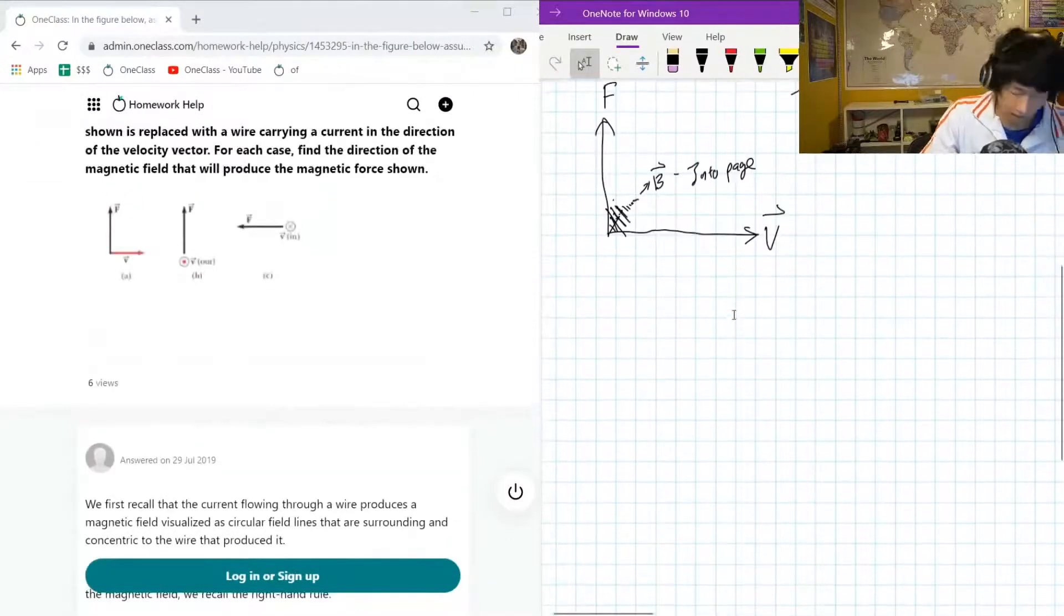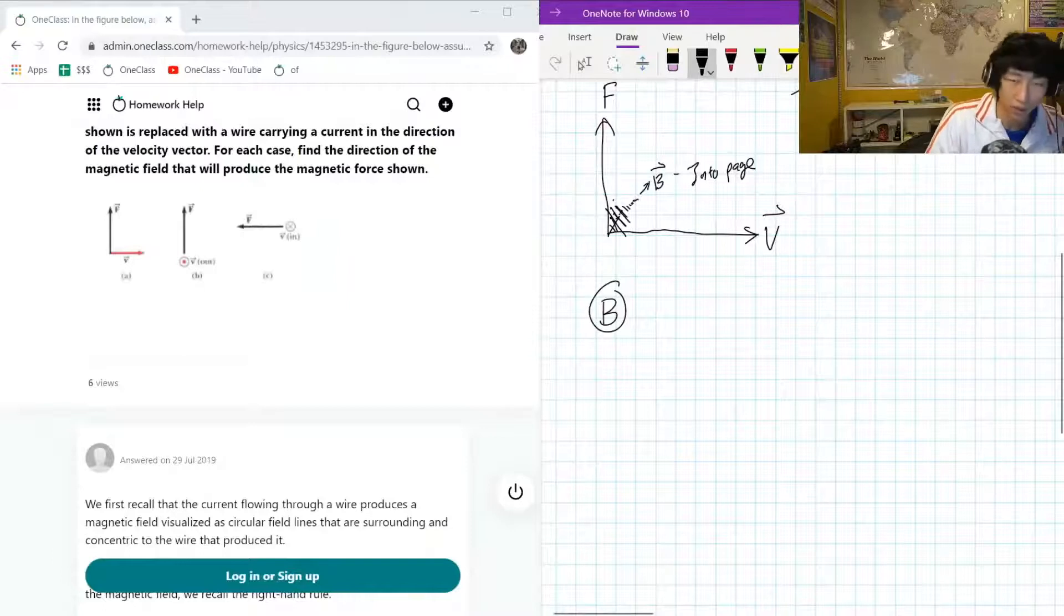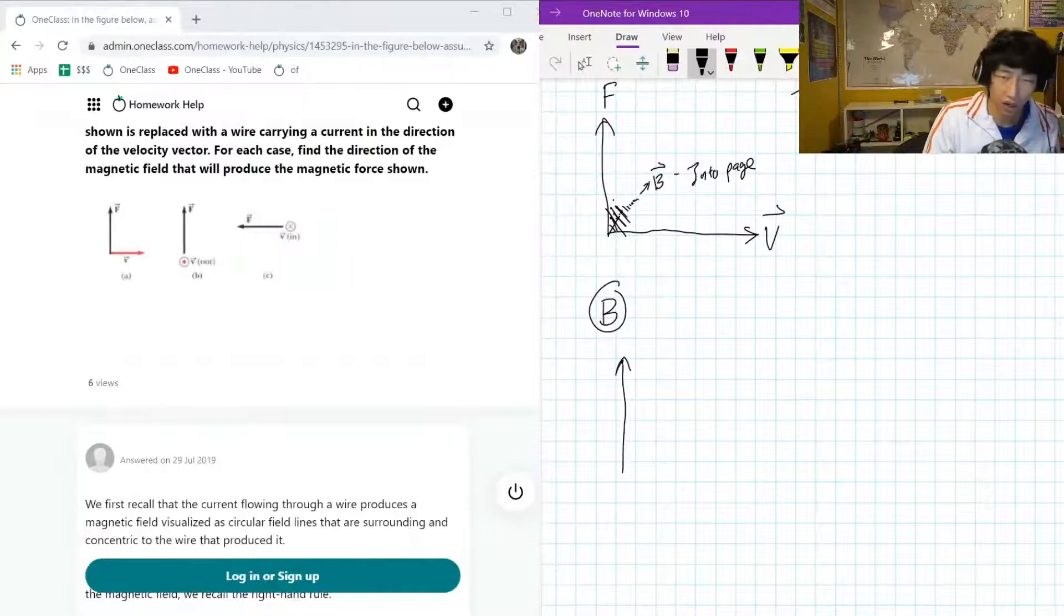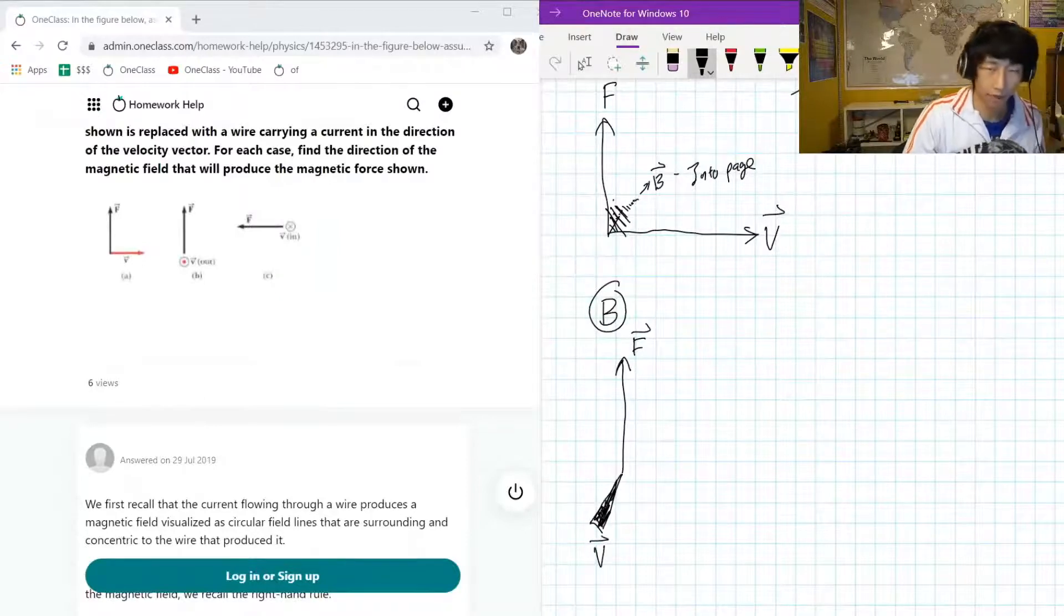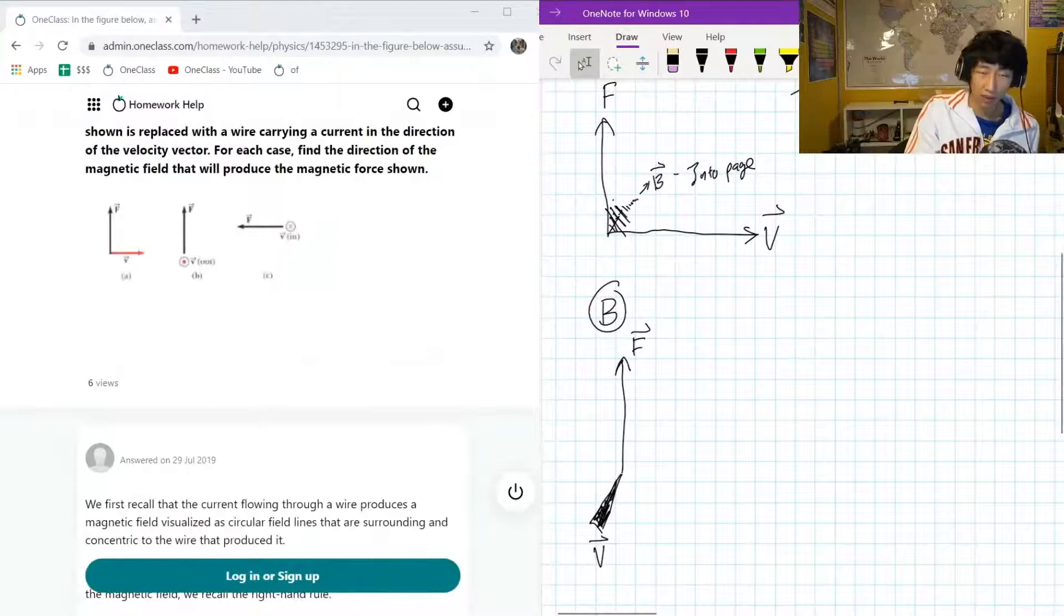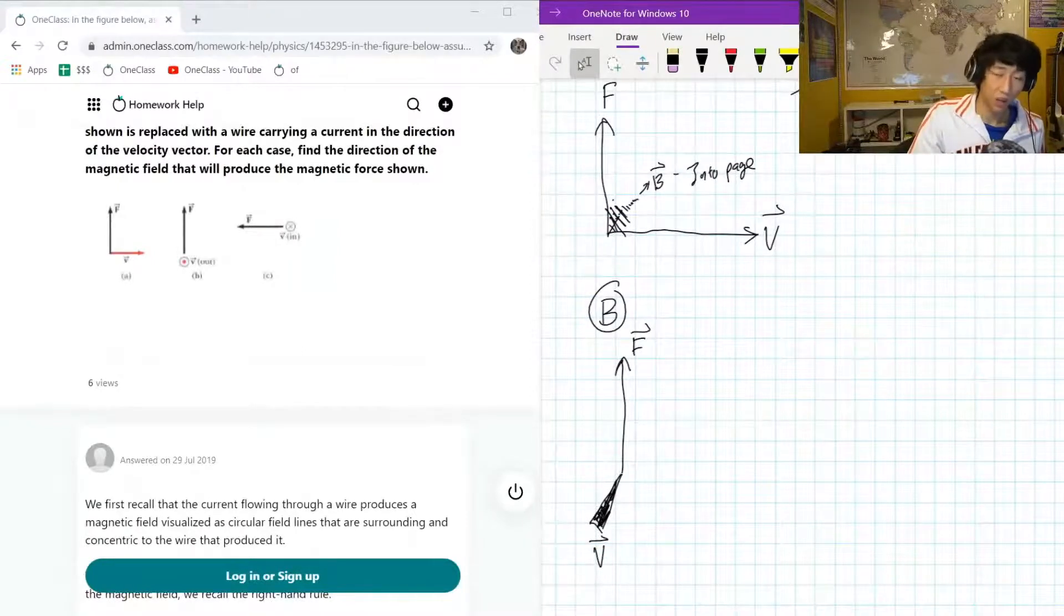Part B is like this. So we have our force still going upwards. And our velocity is coming out of the page. So we can kind of maybe represent it like this. This is our force. This is our velocity. Now, okay, I know that the question mentioned that the velocity vector can be replaced by a wire carrying charge. That would be the same as velocity because it's the movement of charges themselves. So current is just a movement of charges. So it would be the same thing.